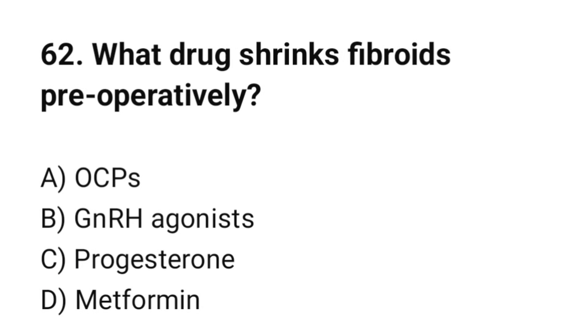Question number 62. What drug shrinks fibroids preoperatively? The correct option is B: GnRH agonists.